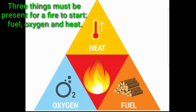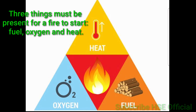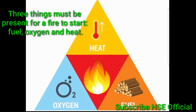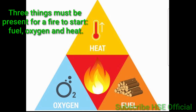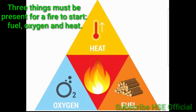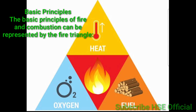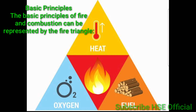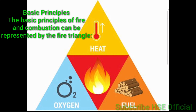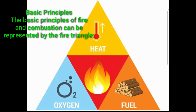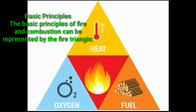Three things must be present for a fire to start: Fuel, Oxygen, and Heat. The basic principle of fire and combustion can be represented by the Fire Triangle. For the fire to exist, three things must be present: Fuel, Oxygen, and Heat.